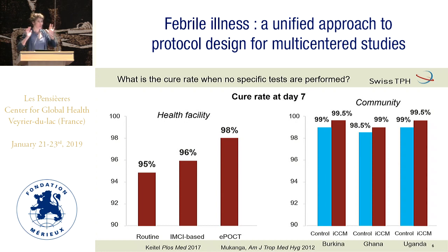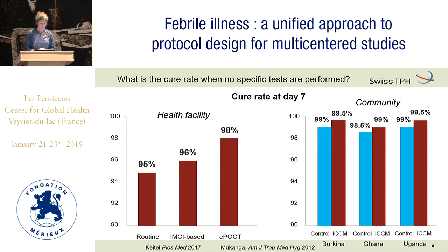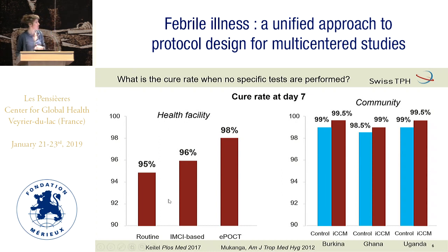If we do nothing, with no lab tests — before all these sophisticated tools — what cure rate did we achieve? Comparing interventions at health facility level versus community level, you can see that at the health facility, doing basically almost nothing, you already get a very high cure rate because most patients have very mild disease. Routine management achieves a 95% cure rate.